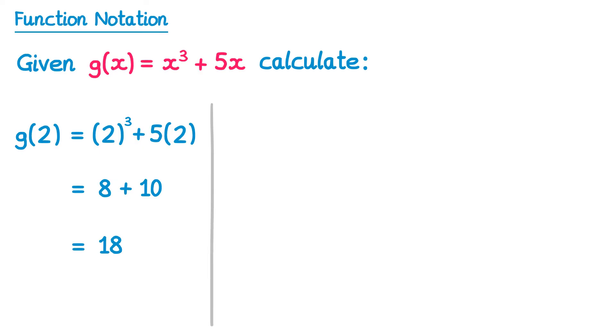We'll do similar with the next one. So g of 5 this time. We'll write the same output down bracket cubed plus 5 bracket and then input 5. So 5 cubed is 5 times 5 times 5 is 125 and 5 times 5 is 25. Add these together and we get 150.